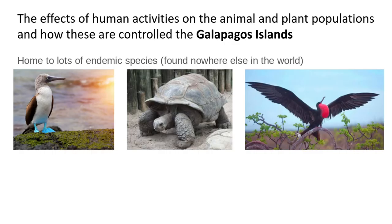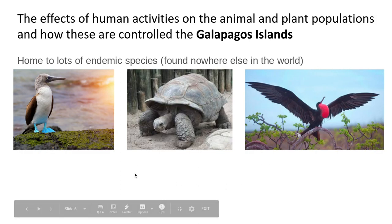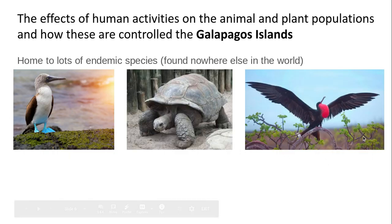The first one we're looking at is the Galapagos Islands. The Galapagos Islands is a very special place in the world because there are lots of endemic species that are found there, such as the blue-footed booby, the giant land tortoise, and also the frigate bird. It's a beautiful place to go and obviously you're not going to see them anywhere else in the world.